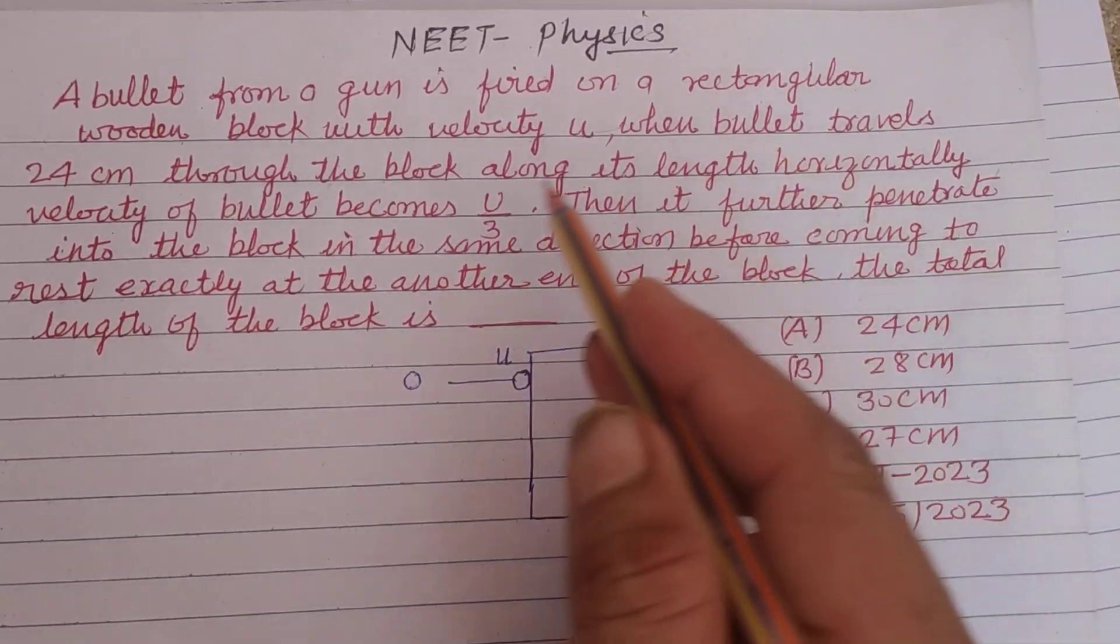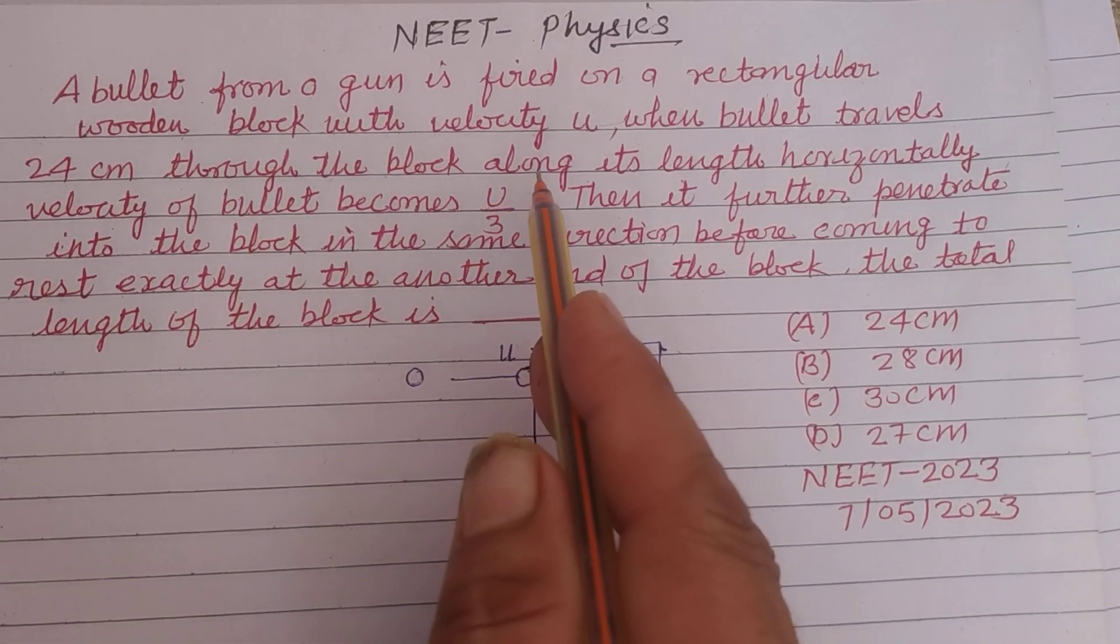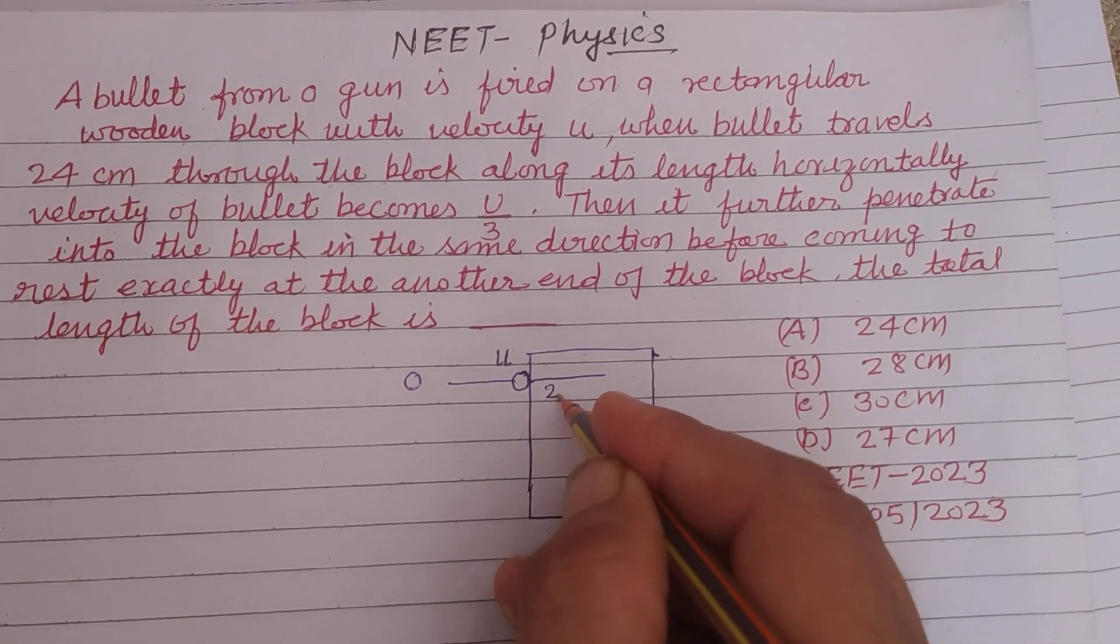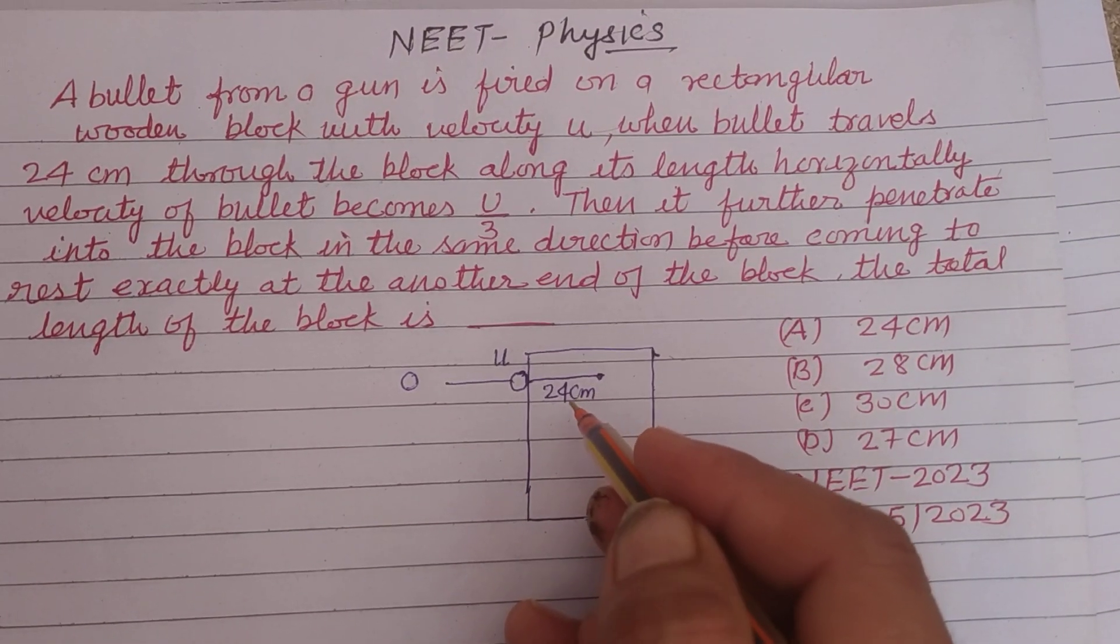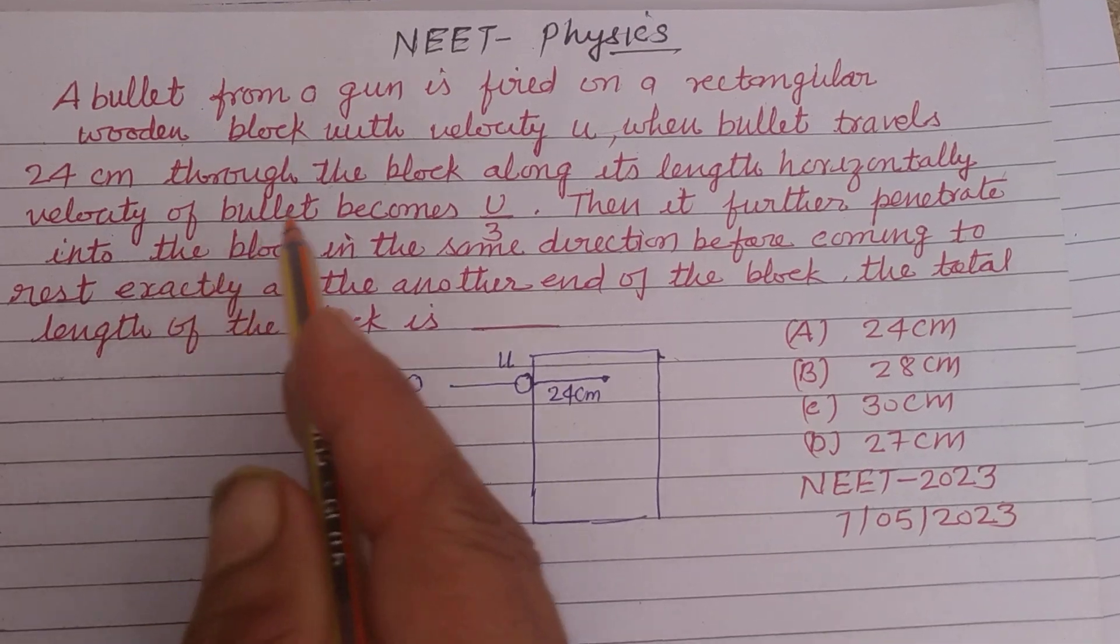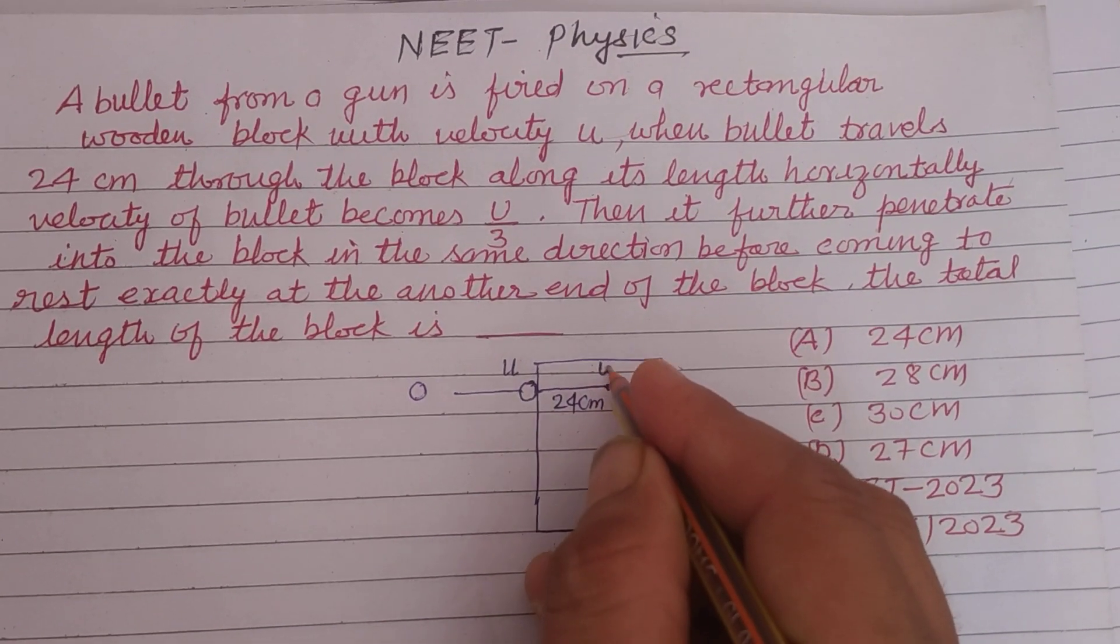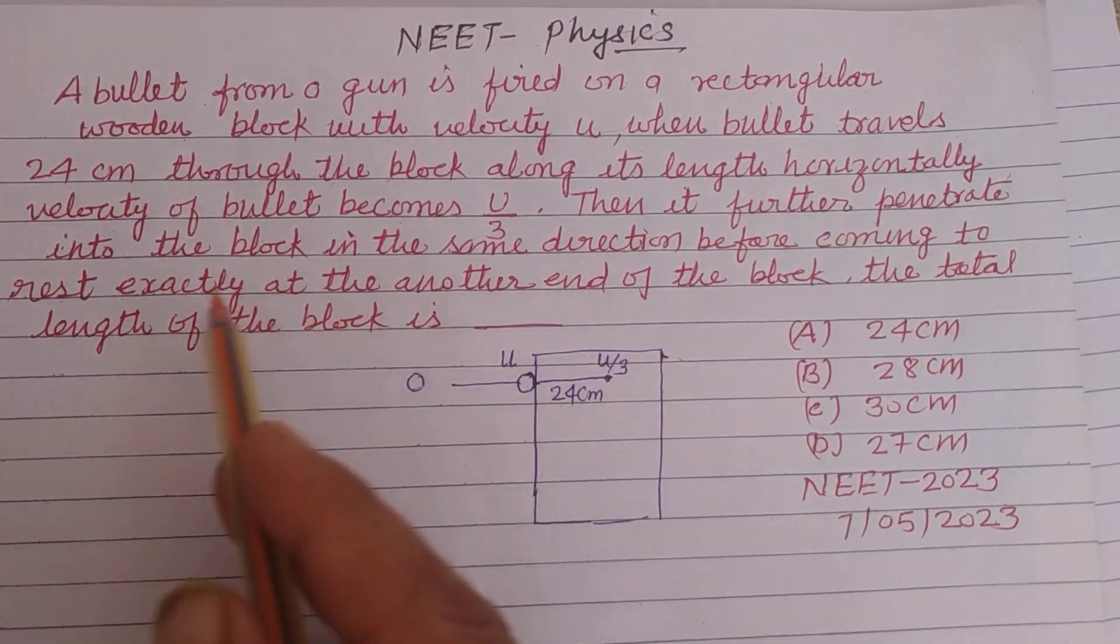When the bullet travels 24 centimeters through the block and covers this 24 centimeter distance inside the block, the velocity of the bullet becomes U by 3. Then it further penetrates the block.